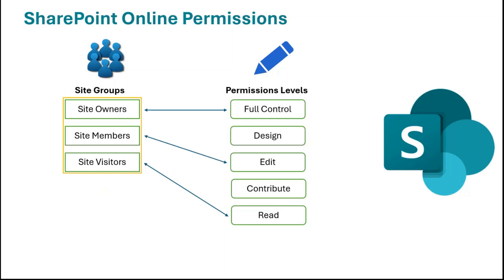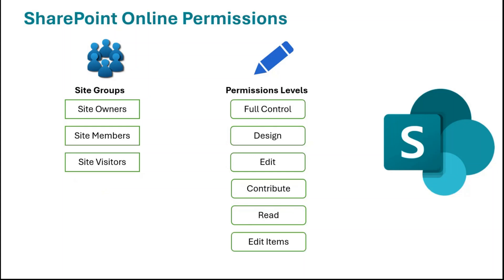Apart from the five standard permission levels, we can create custom permission levels and assign them to groups of users. For example, we can create a permission level called 'Edit Items', create a group, assign this permission level to that group, and add users to it. Those users will get edit items permission — they can edit items within a list, edit document libraries, and customize web parts within the SharePoint site.